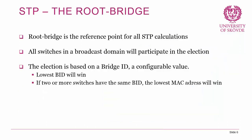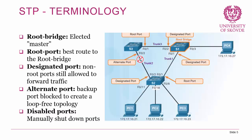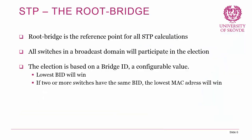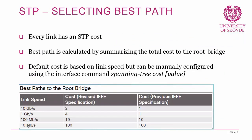The root bridge is the reference point for all STP calculations. All switches in the broadcast domain participate in the election to become the root bridge when they boot up. The election is based on the bridge ID, which is a configurable value — the switch with the lowest bridge ID wins. If two or more switches have the same bridge ID, the lowest MAC address wins. In our topology, Switch 1 had the lowest bridge ID and won the election.